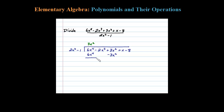After lining up like terms, you then subtract. When you subtract, 6x to the fourth minus 6x to the fourth is zero — that's what we want. Distributing this negative: when you subtract a negative you're really adding, so that leaves us with plus 6x squared.